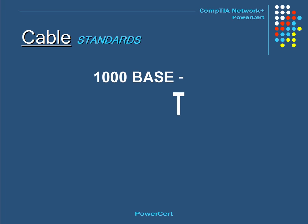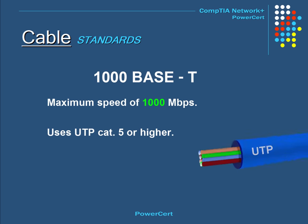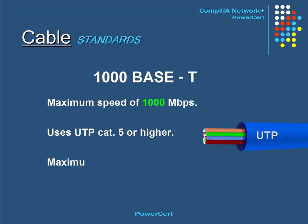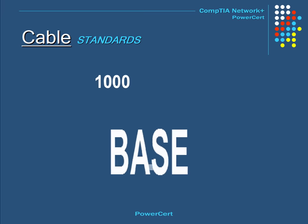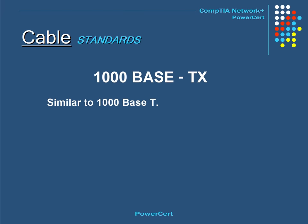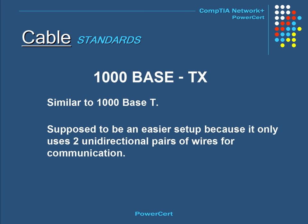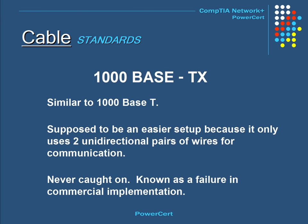Moving on to the gigabit standards, there is 1000BASE-T, which has a speed of 1000 megabits per second. It uses Category 5 UTP cabling or higher and has a maximum length of 100 meters. 1000BASE-TX is similar to 1000BASE-T, except it was supposed to be an easier setup using only two unidirectional pairs of wires, whereas 1000BASE-T uses four bi-directional wires. However, 1000BASE-TX never caught on and is known as a failure in commercial implementation.